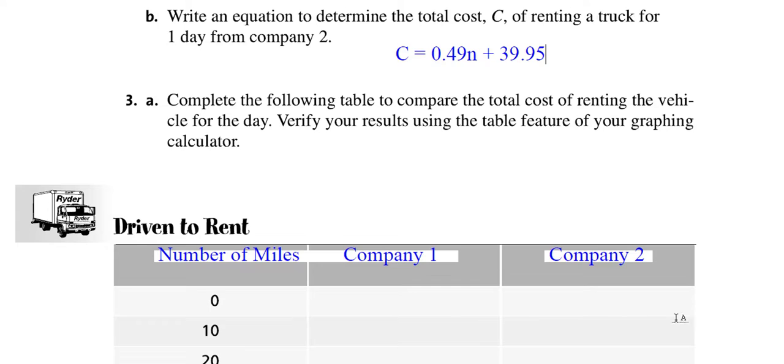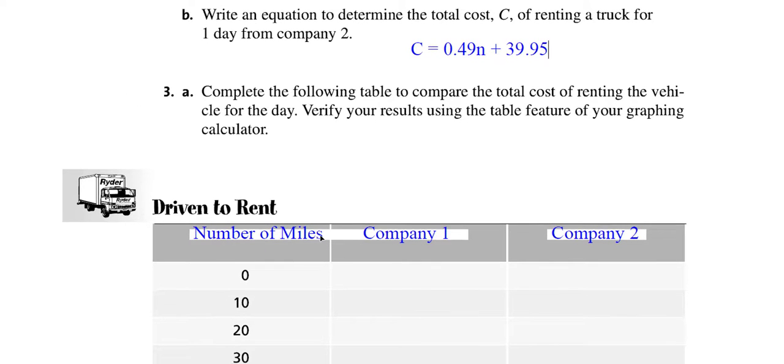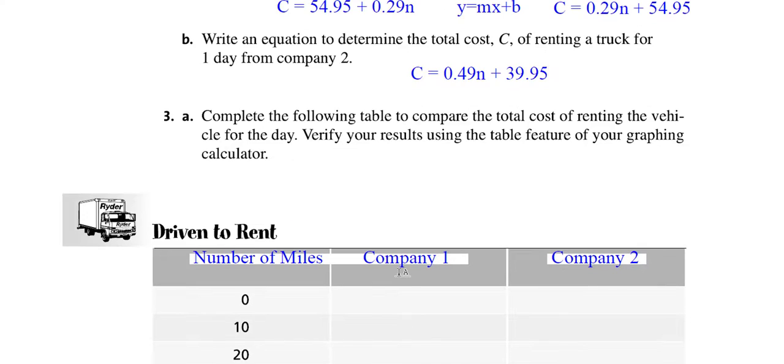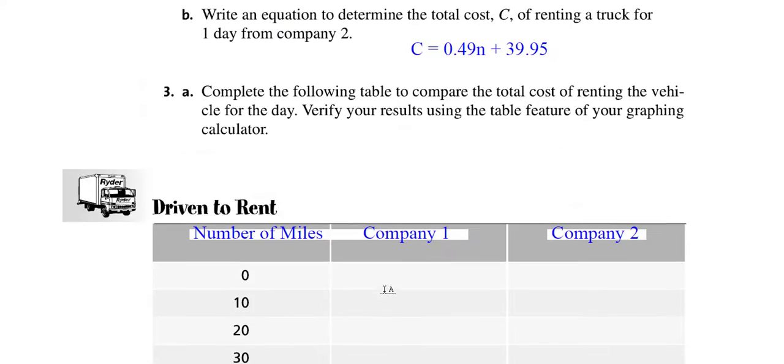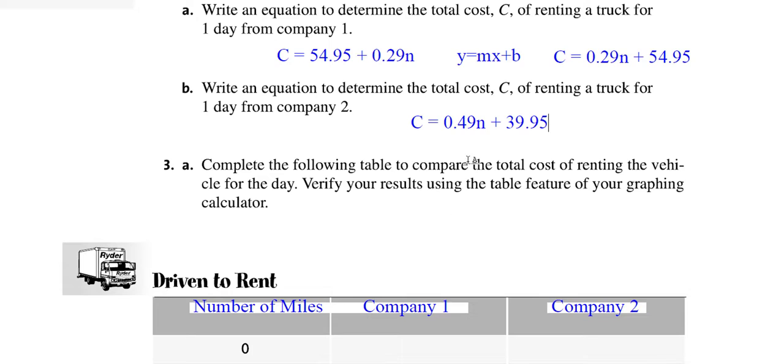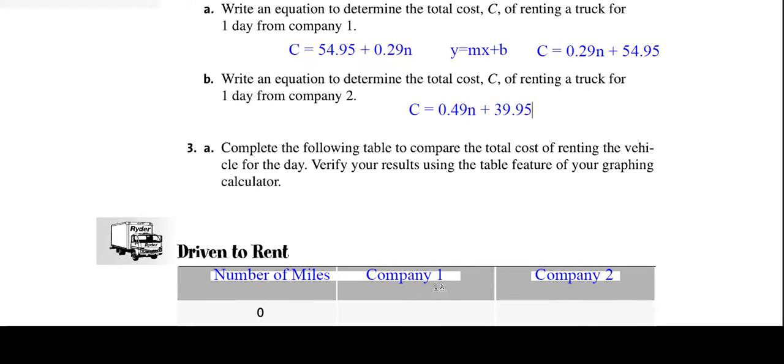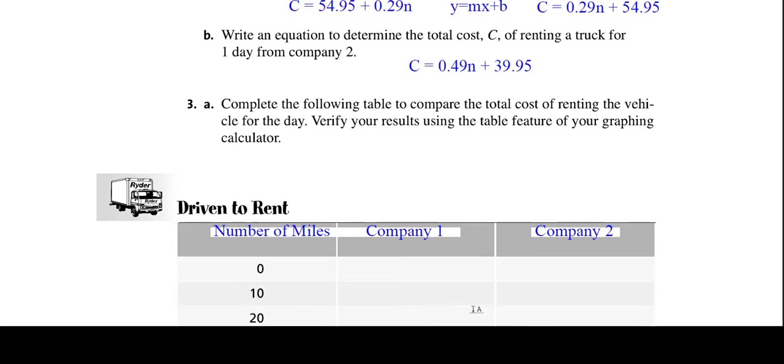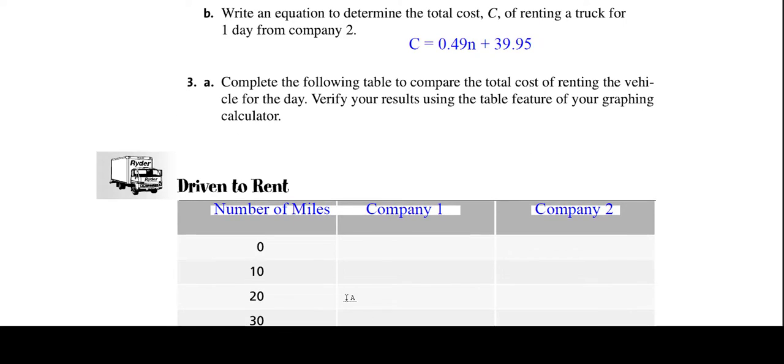Next, we're asked to complete a table. Now, my table was missing the word, so I just typed in number of miles and company one. Now, to fill in this table, we have the option of substituting in 0 to each of these equations and then writing the answer. And then substituting in 10 to each of these equations and writing the answer. But a quicker way would be to use our graphing calculator.